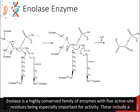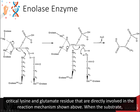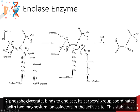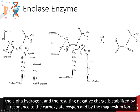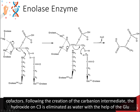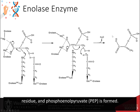Enolase is a highly conserved family of enzymes with 5 active site residues being especially important for activity. These include a critical lysine and glutamate residue that are directly involved in the reaction mechanism. When the substrate, 2-phosphoglycerate, binds to enolase, its carboxyl group coordinates with two magnesium ion cofactors in the active site. This stabilizes the charge on the deprotonated oxygen while increasing the acidity of the alpha-hydrogen. Enolase's lysine residue deprotonates the alpha-hydrogen, and the resulting negative charge is stabilized by resonance to the carboxylate oxygen and by the magnesium ion cofactors.